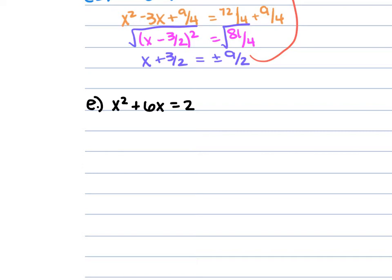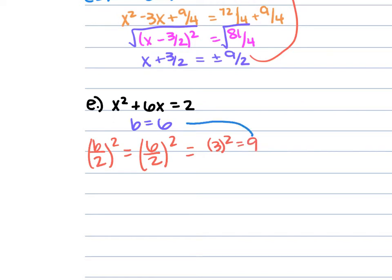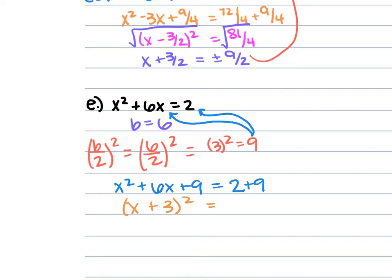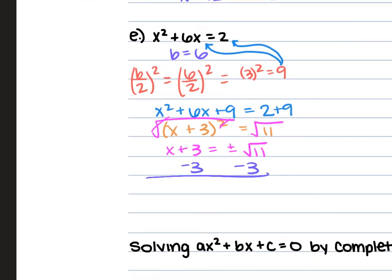For example e, we have x squared plus 6x equals 2. The constant is already on its own side. b is 6, so b over 2 squared: 6 over 2 squared is 3 squared, which is 9. Add 9 to both sides: x squared plus 6x plus 9 equals 2 plus 9. This gives us x plus 3 squared equals 11. Take the square root: x plus 3 equals plus or minus the square root of 11. Subtract 3 from each side: x equals negative 3 plus or minus the square root of 11.